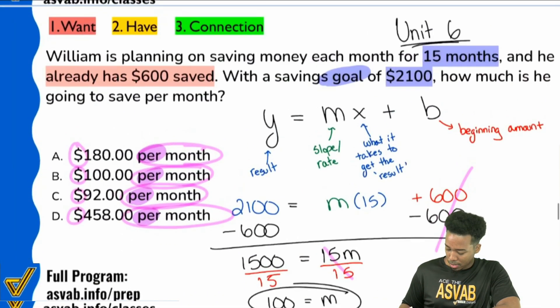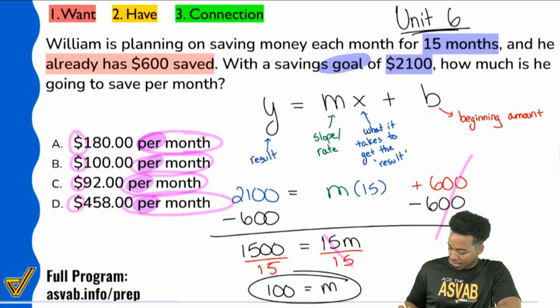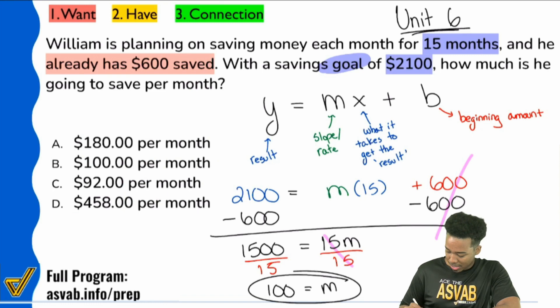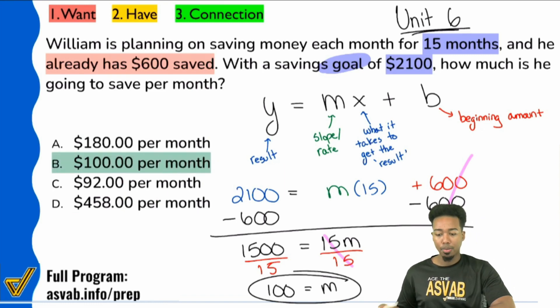So our friend here, William, is saving $100 per month. Right there. Let me just erase all of this here. William is saving $100 per month.